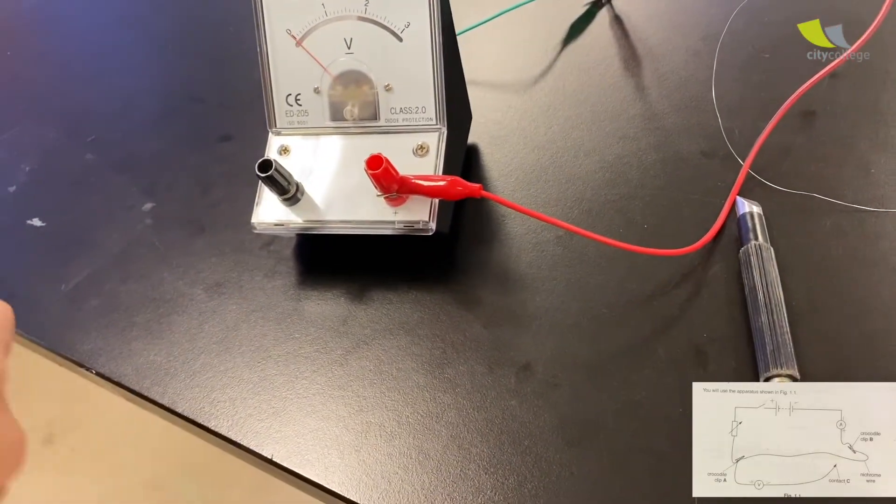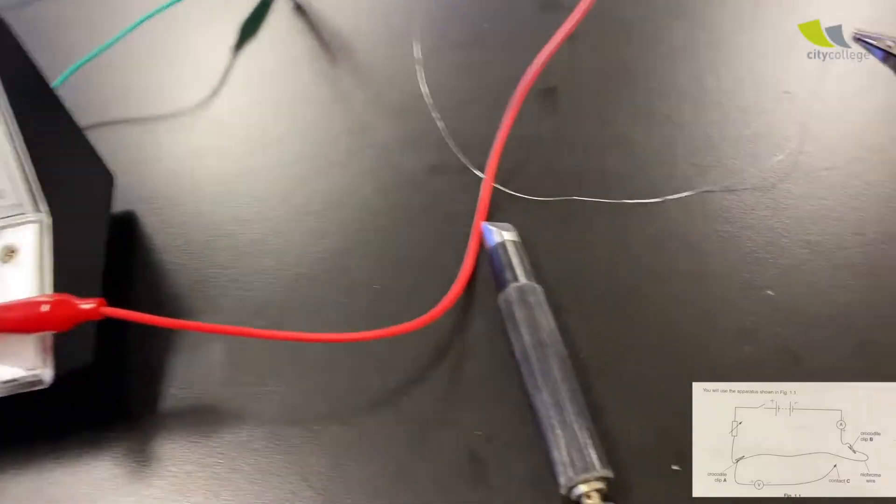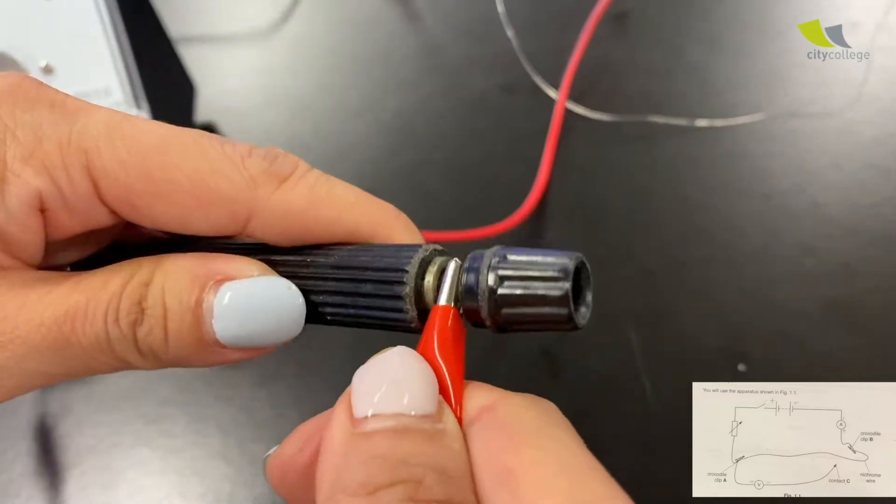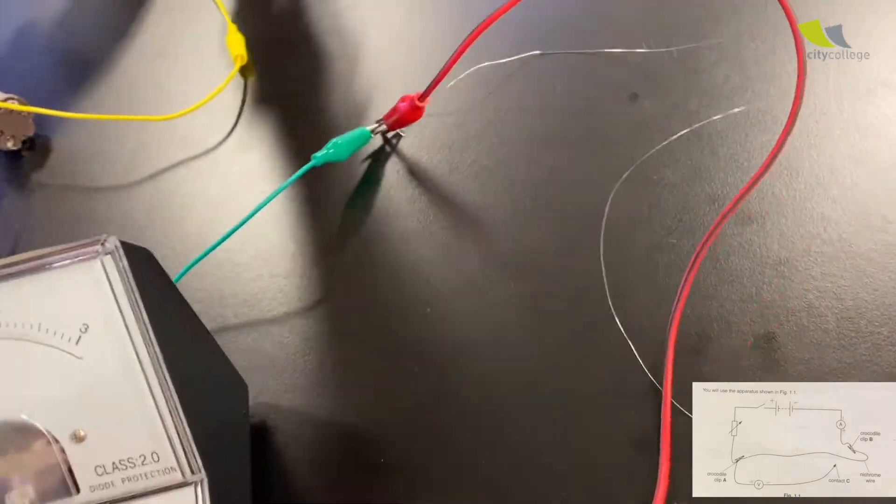Okay. So because it's positive at the battery side, so she linked to positive. Right? The other end to the jockey. Go to the jockey. So we're going to turn it on again to see if there's a reading on the voltmeter.